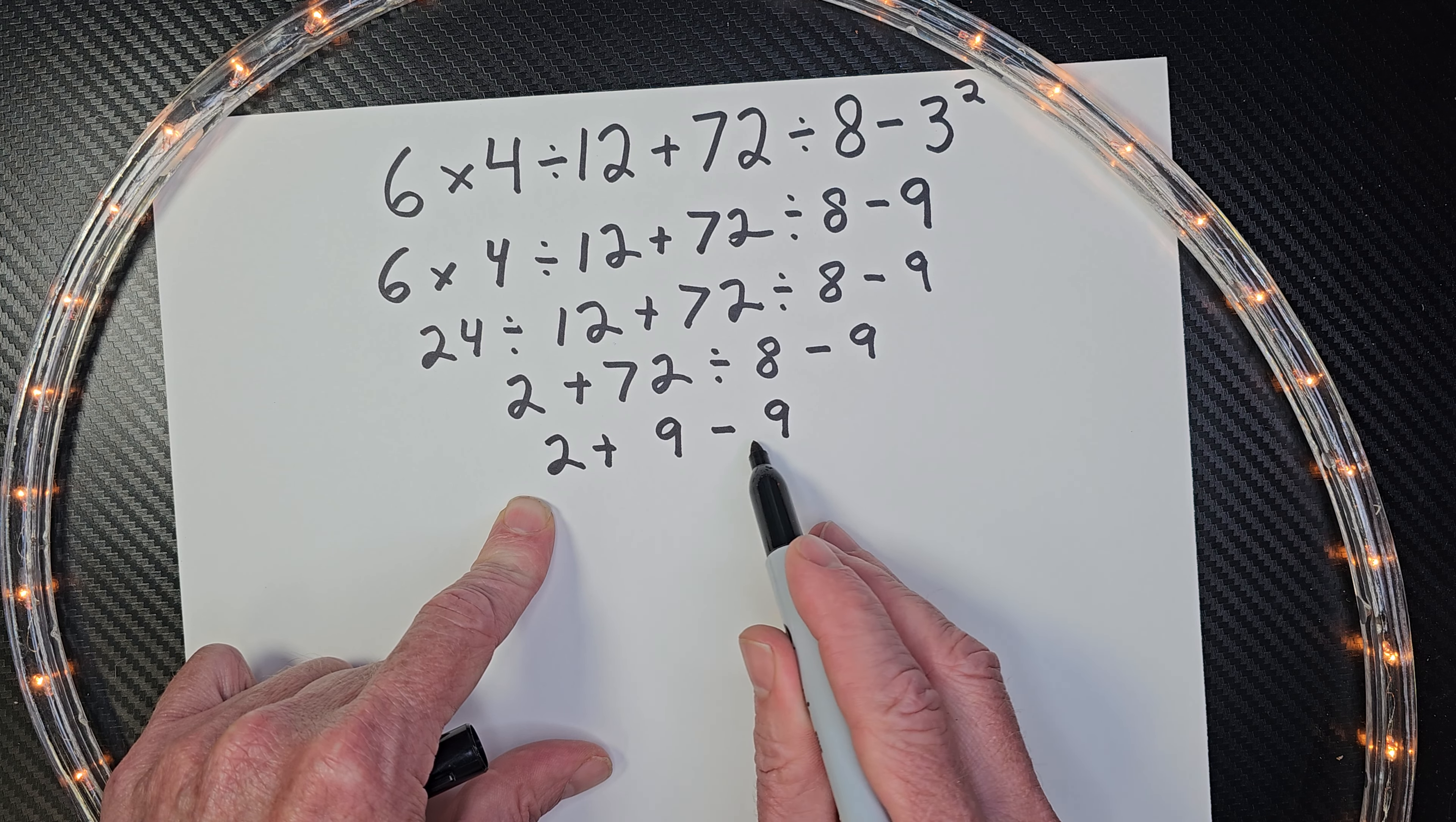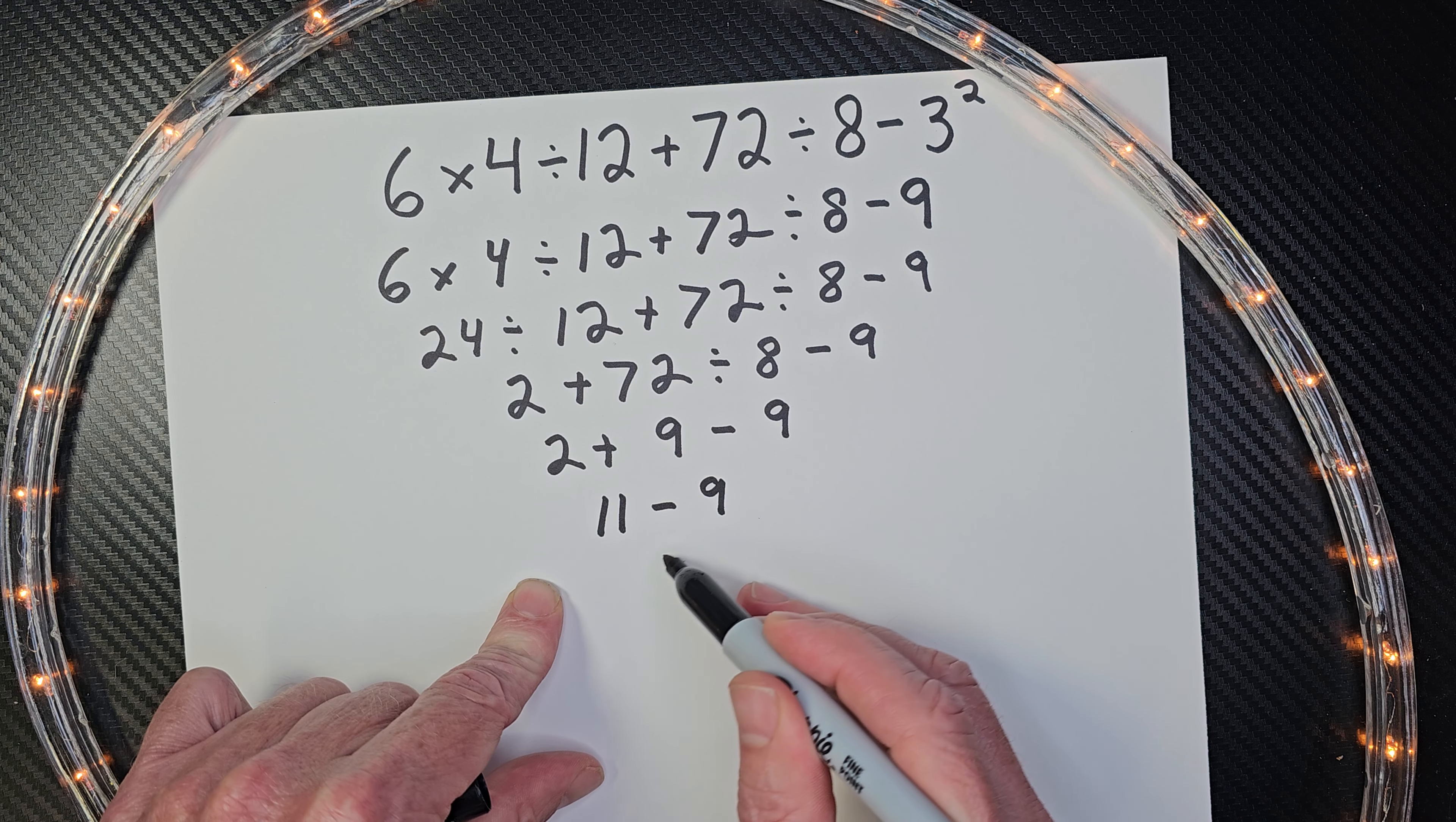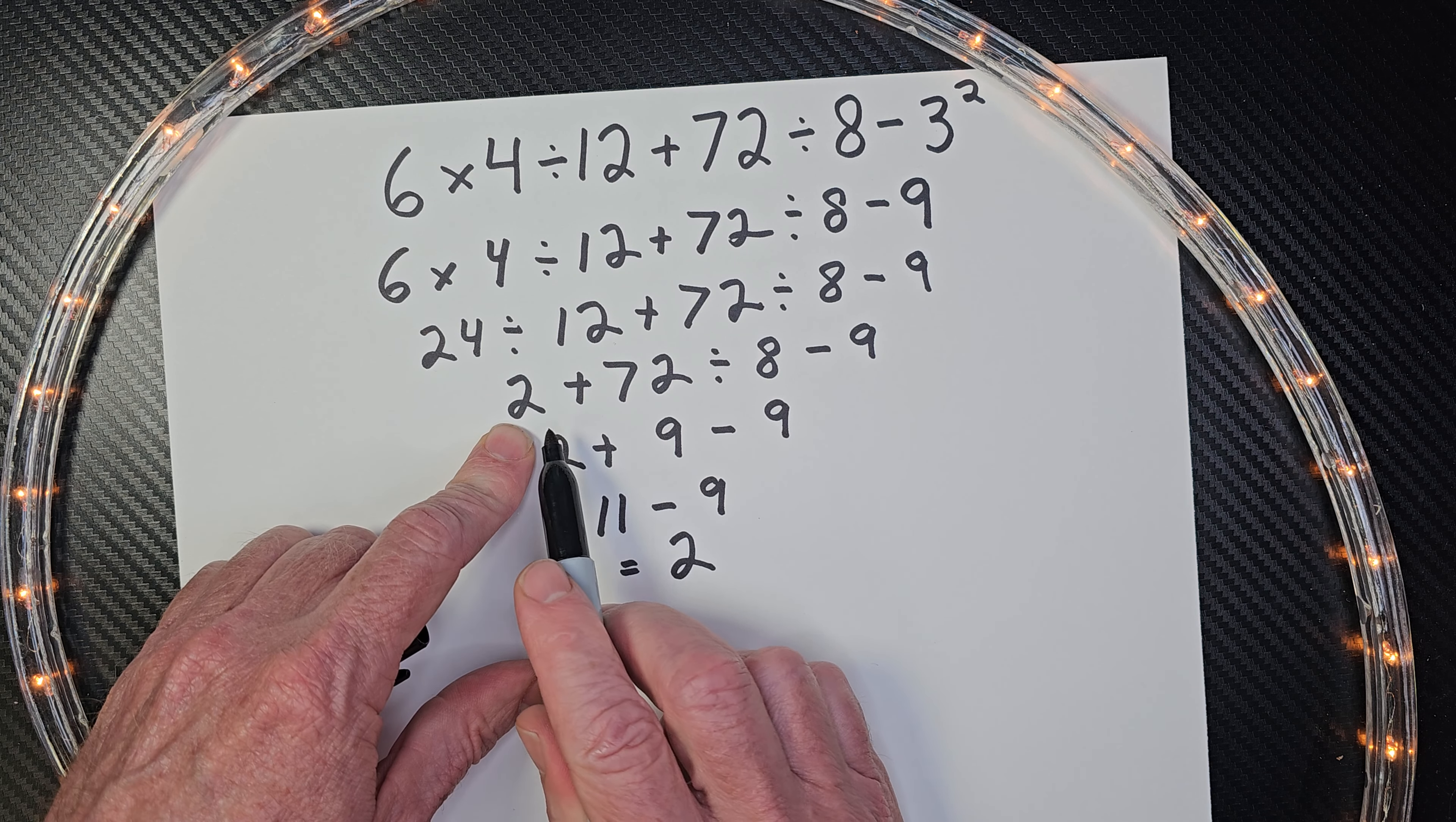All right. So now I'm going to go ahead and do addition from left to right. And of course you can see a little shortcut right there, but I'm just going to go ahead and do 2 plus 9 would be 11 minus 9. And then our answer would be 2.